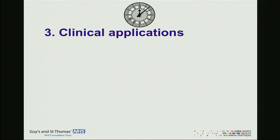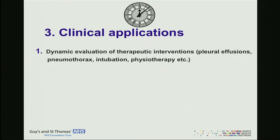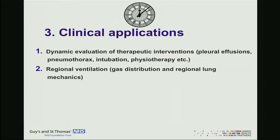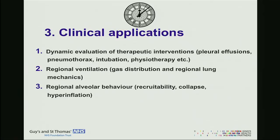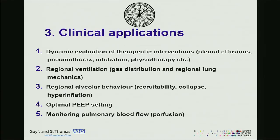Moving to clinical applications, there are a variety — I'll give just brief examples for the sake of time. Some involve evaluation of therapeutic interventions such as physiotherapy, detection of pneumothorax, intubation, or pleural effusions. We also want to know regional lung behaviour: where gas is distributed, lung mechanics at the regional level, whether a region is recruitable, collapsing, or hyperinflated, and whether we can set optimal PEEP based on that. Finally, there is pulmonary blood flow — a very new avenue of research in EIT to see whether we can match ventilation with perfusion of the lung.